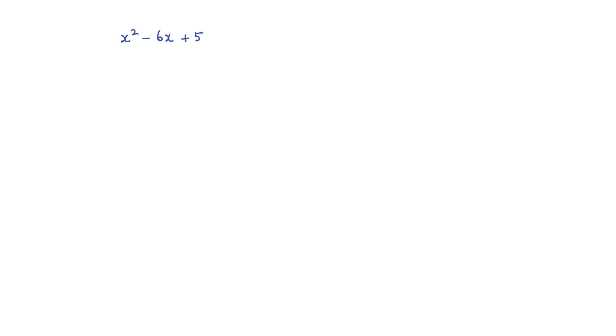For this question we're asked to factorize x squared minus 6x plus 5. If you recall the method, we need two numbers that the product is 5 and the sum is negative 6.